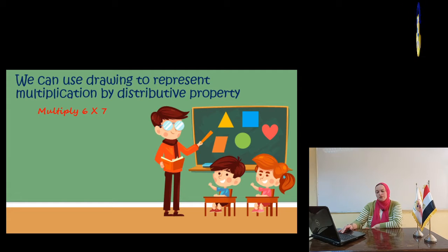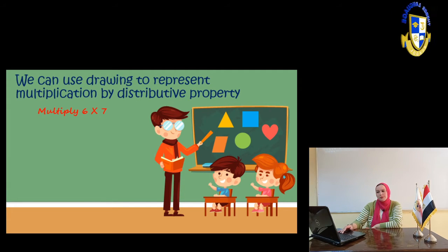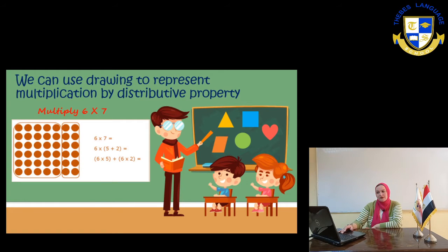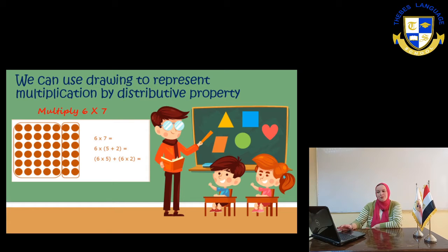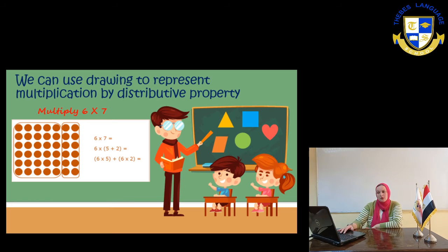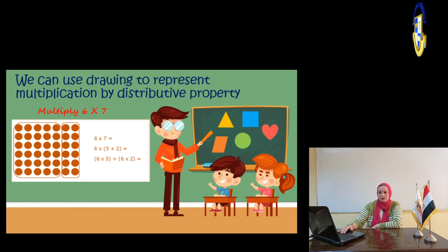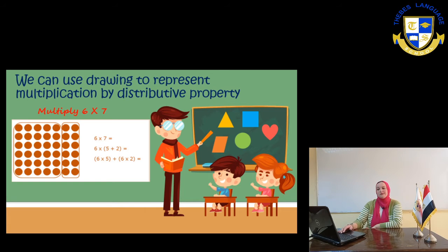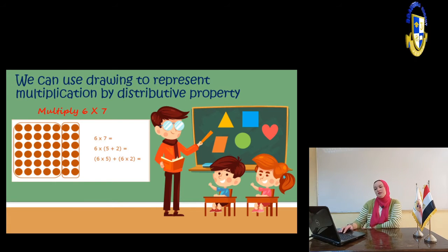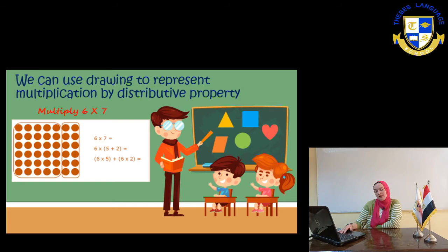We can use drawing to represent multiplication by the distributive property. Multiply 6 times 7. If we have an array, it will be 6 times 7. We can break the 7 into two numbers: 5 plus 2. Now we are going to make 6 times 5 plus 6 times 2. 6 times 5 equals 30, 6 times 2 equals 12. After that, the result will be 42.